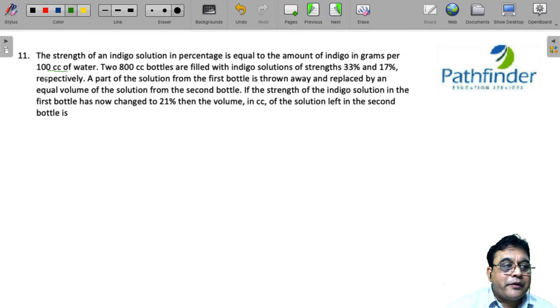CAT 2021 Slot 1, Question Number 11: The strength of an indigo solution in percentage is equal to the amount of indigo in grams per 100 cc of water. Nothing new in that information.